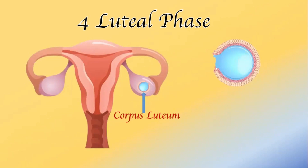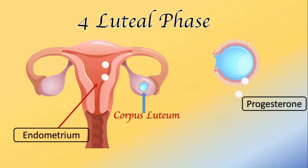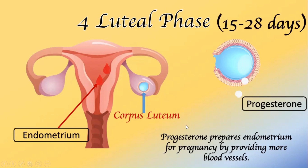Within the luteal phase, changes are observed at both the ovarian level and the endometrial level. The corpus luteum, formed in the ovulation phase, starts releasing a hormone named progesterone. This progesterone binds with the endometrium, which was already thickened during the follicular phase, and makes it more nutrient-rich by providing blood vessels. Progesterone thereby prepares the endometrium for pregnancy. This phase generally lasts between day 15 to day 28.